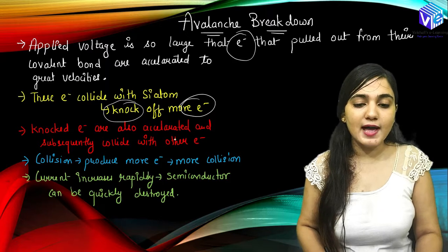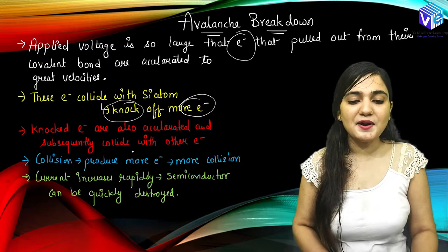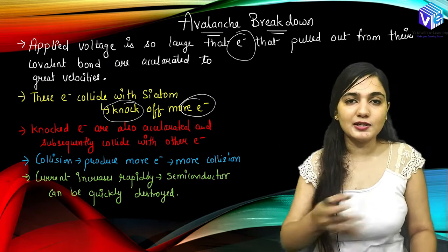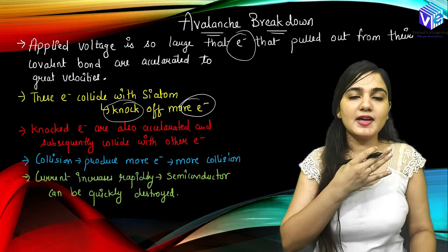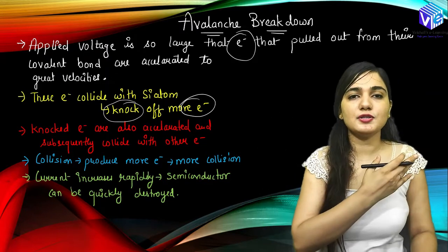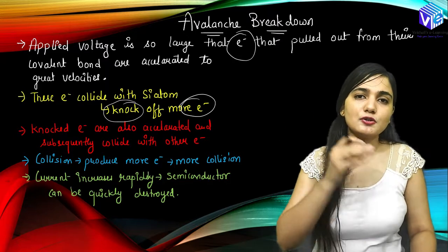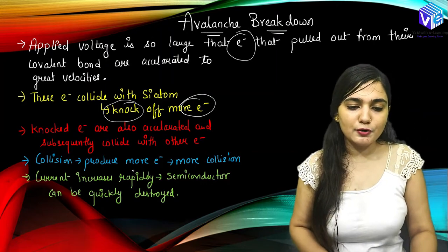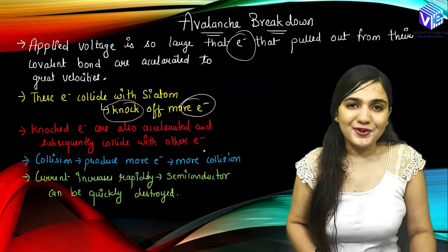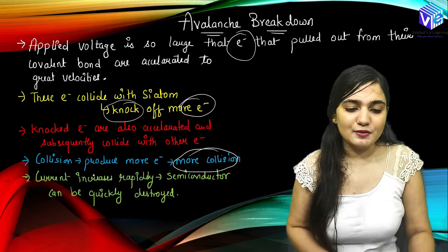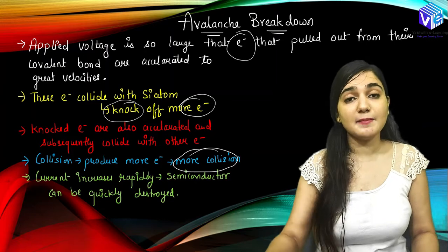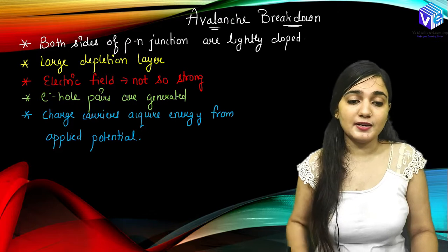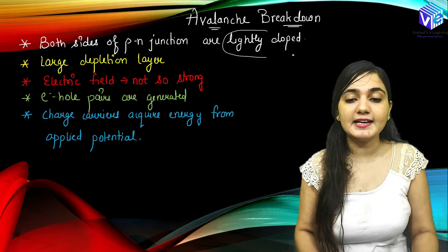Knocked electrons are also accelerated and they subsequently collide with other electrons. The outer electrons are moving out with a very high velocity, colliding, and again producing more electrons. The produced electrons will move, accelerate, collide, and produce more electrons. So collision produces more and more electrons, and more electrons produce more collisions. Current increases very rapidly and the semiconductor can be quickly damaged if used after the avalanche breakdown. Both sides of the p-n junction are lightly doped in this case.